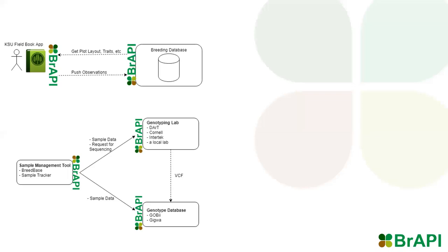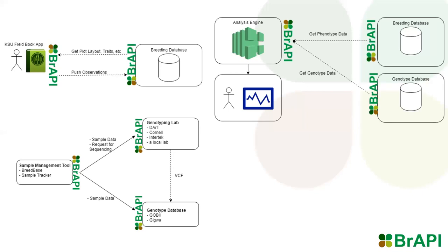When genotyping, we can automate sample data management between the breeding database and the genotyping lab. When the lab is finished processing samples, genotype data can be automatically pulled into a genotype database. When performing downstream analysis, data from multiple different sources can be pulled together using BrAPI. Because the analysis engine is using BrAPI standard data structures as input, it can be reused by any breeding program with a BrAPI-compatible database.